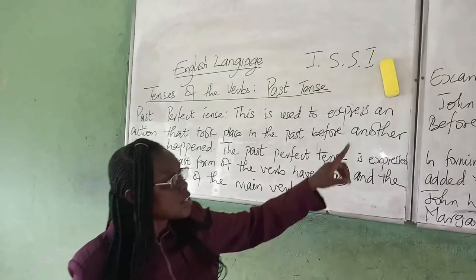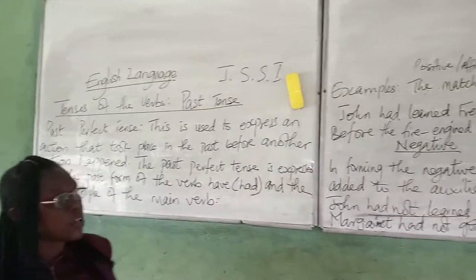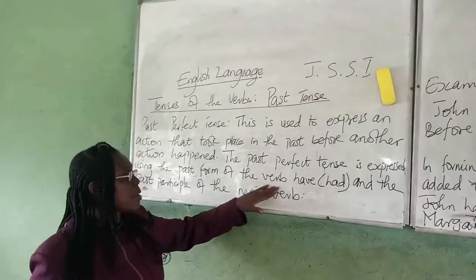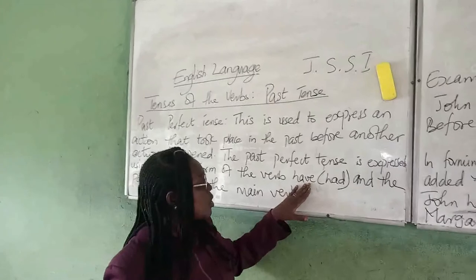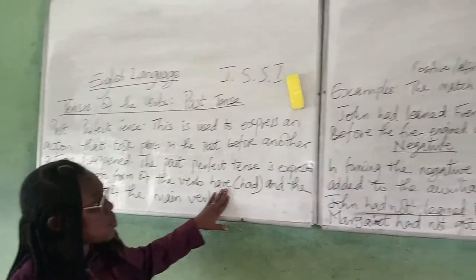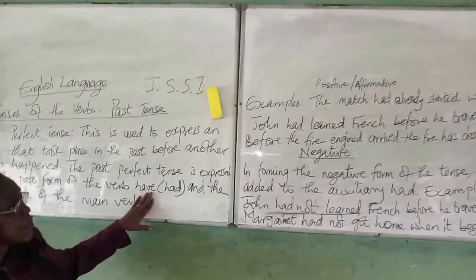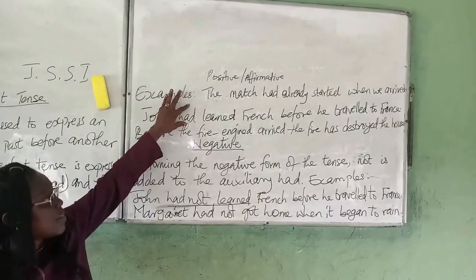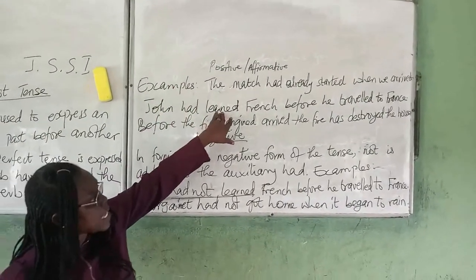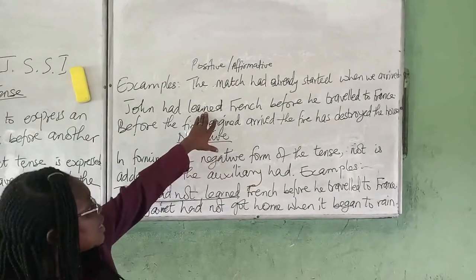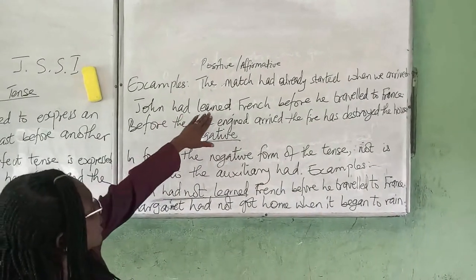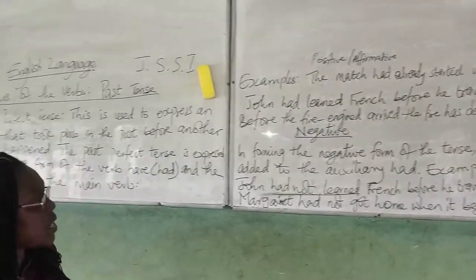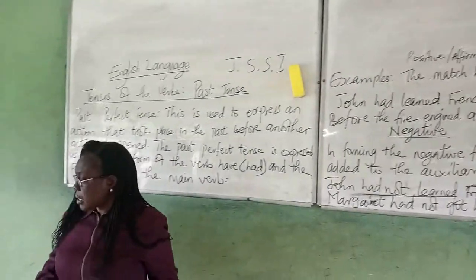I'll now have: 'John had learned French before he traveled to France.' We said that the verb 'had' and the past participle of the main verb is used. So we have 'John had learned French before he traveled to France.'